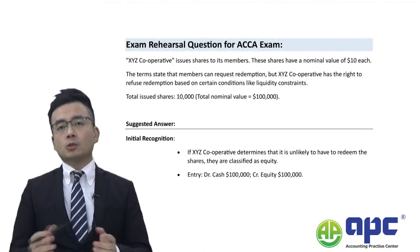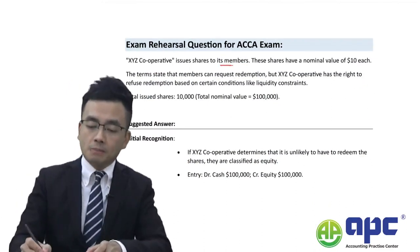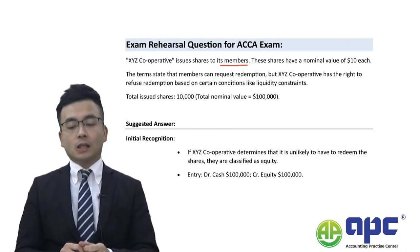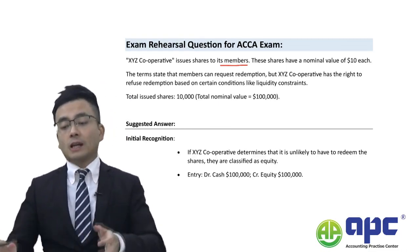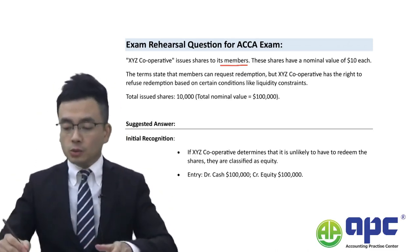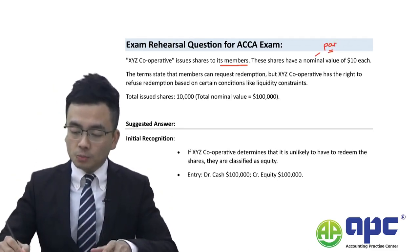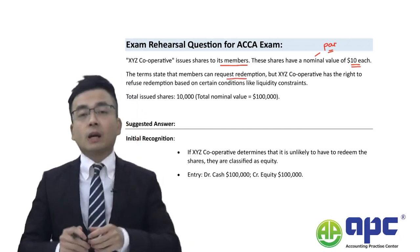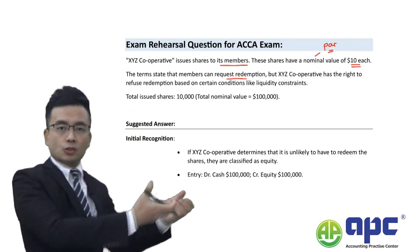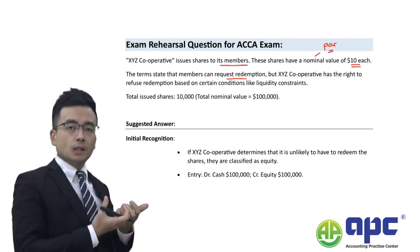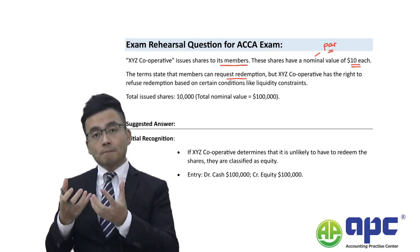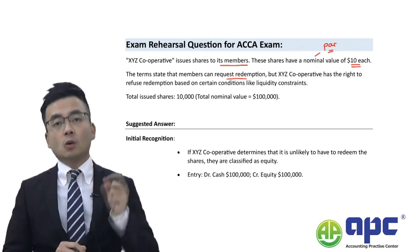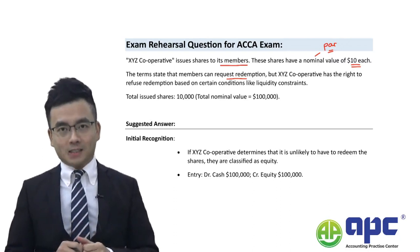Cooperatives may issue shares to their members, and giving shares to members is very commonly seen in practice. These shares have a nominal value — the par value or cost of each share is $10 each. The terms state that members can request redemption, meaning the cooperative receives money from members and is required to pay it back if members want that at some point in the future.